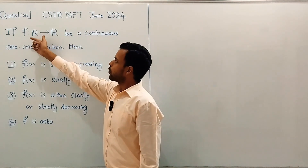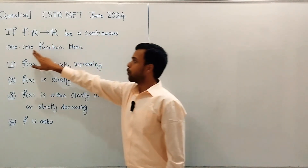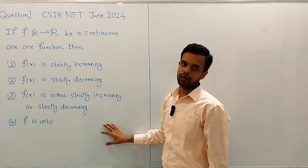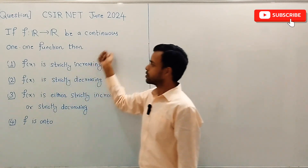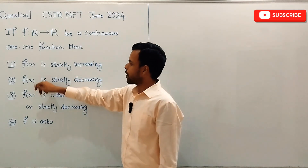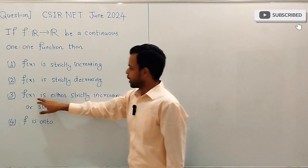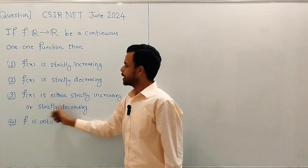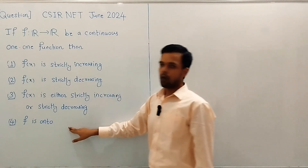The question is: if f from R to R is a continuous one-one function, then which of these four options is true? Option 1: f(x) is strictly increasing. Option 2: f(x) is strictly decreasing. Option 3: f(x) is either strictly increasing or strictly decreasing. Option 4: f is onto.